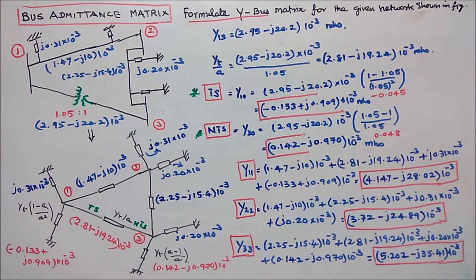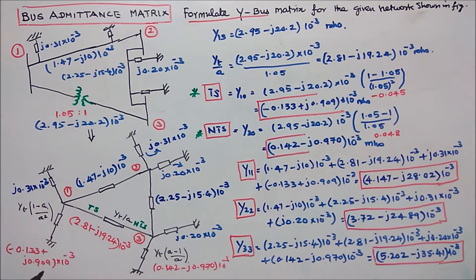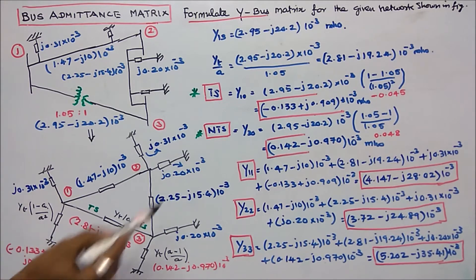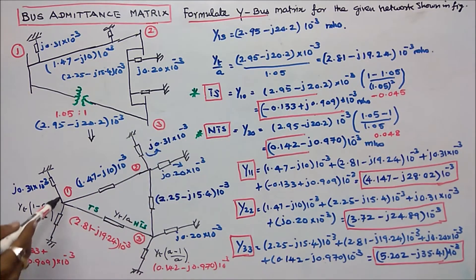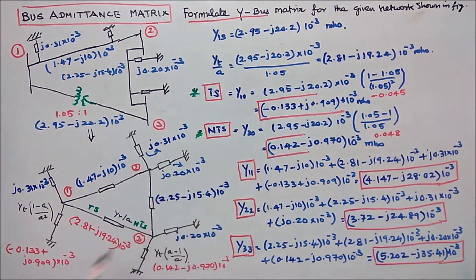The next step is to find the line charging admittance on the tap setting side. The formula is yt into (1 minus a) divided by a squared, where a equals 1.05 and yt equals 2.95 minus j20.2 into 10 power minus 3. The tap setting side line charging admittance is minus 0.133 plus j0.909 into 10 power minus 3.